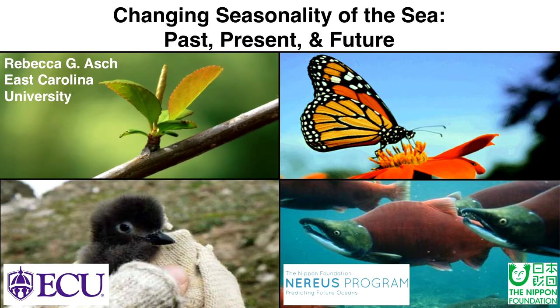This slide behind me has several examples of phenological cycles. As terrestrial animals that live on land, one we're all familiar with is bud burst, where in spring trees have their buds come out. Other examples include seasonal migrations of monarch butterflies and salmon. And lastly, for many animals, they reproduce seasonally — I have a picture of a cute baby seabird as an example of that.